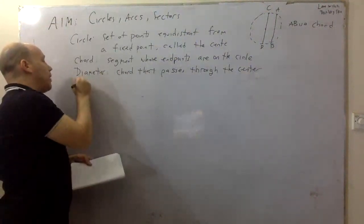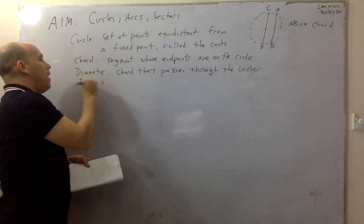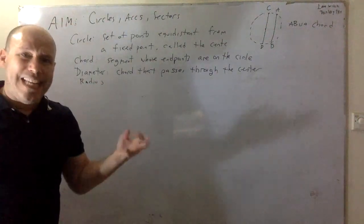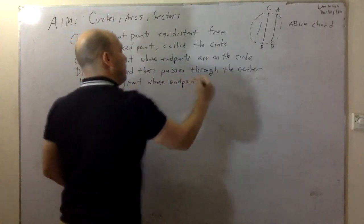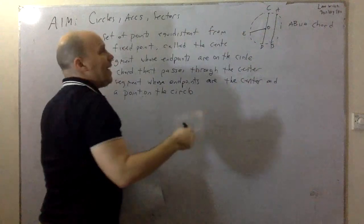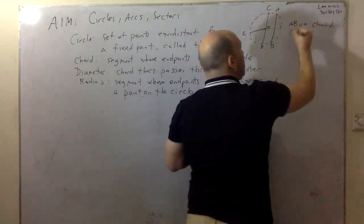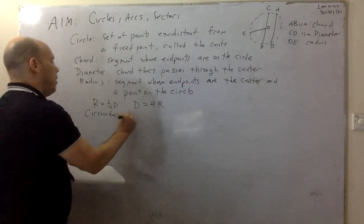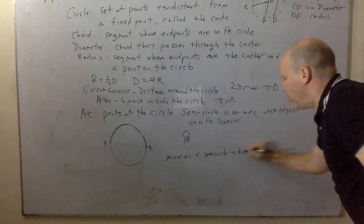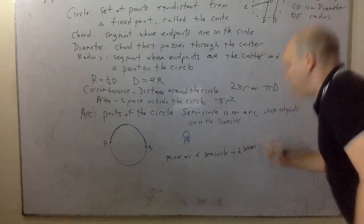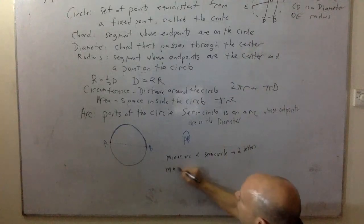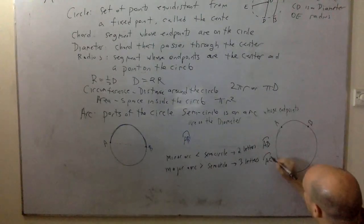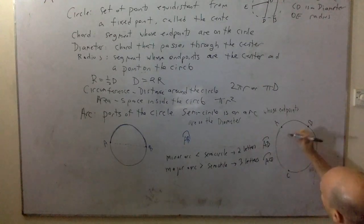So what is a circle? A circle is a set of points equidistant from a fixed point called the center. Like everything in this class — a line, a parabola — everything starts as a set of points. We have the center here, and all these points around it — that's the idea of a circle.